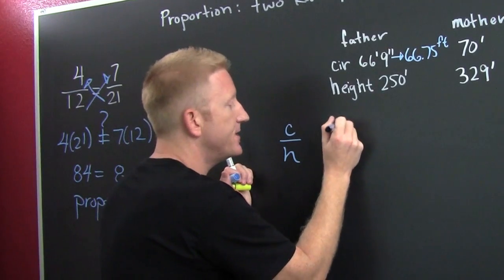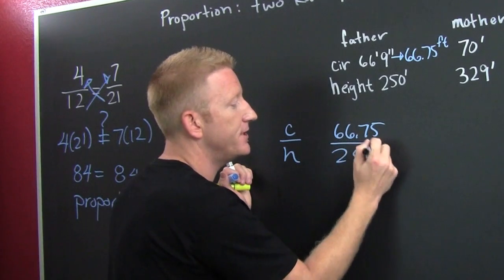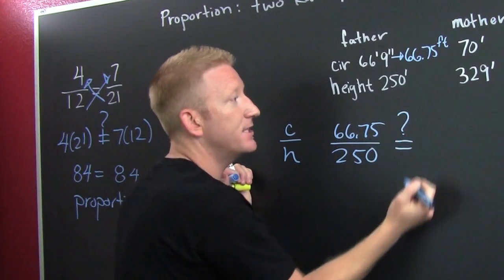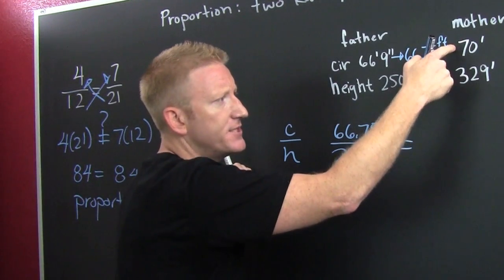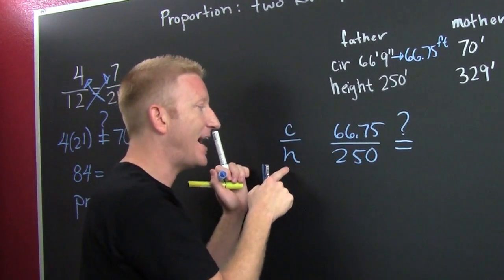So, we'll say 66.75 is to 250. We want to know whether or not that's going to be the same as the circumference here to the height there. The 'to the' goes on bottom. We're doing circumference to height.